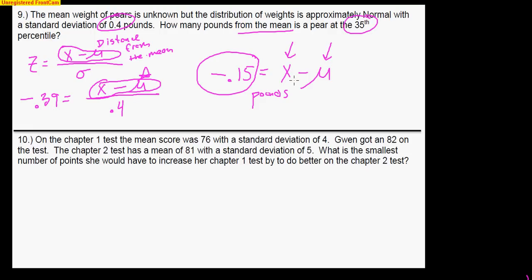Alright, number 10. On Chapter 1 test, the mean score was 76, the standard deviation of 4. Gwen got an 82. So let's just stop right there and let's find Gwen's Z-score on the Chapter 1 test. On Chapter 1, she got an 82 minus 76 divided by 4. Her Z-score should be exactly 1.5 standard deviations above the mean.